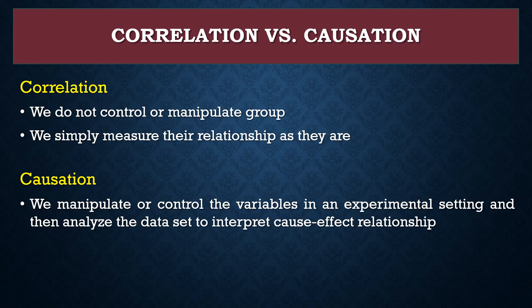Basically, the structure of correlation and causation is different. In correlation, we do not control or manipulate groups or variables — we simply measure their relationship as they are naturally. But in causation, we manipulate or control the variables in an experimental setting and then analyze the data to interpret the cause and effect relationship.